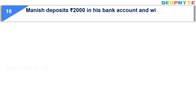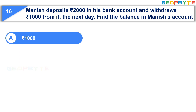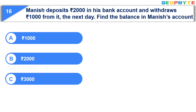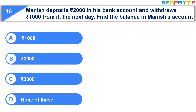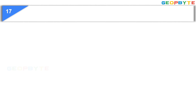The sixteenth question: Manish deposits rupees 2000 in his bank account and withdraws rupees 1000 from it the next day. Find the balance in Manish's account. Option A: rupees 1000. Option B: rupees 2000. Option C: rupees 3000. Option D: none of these. Your time starts now. Your time is up. And the correct answer is Option A: rupees 1000.